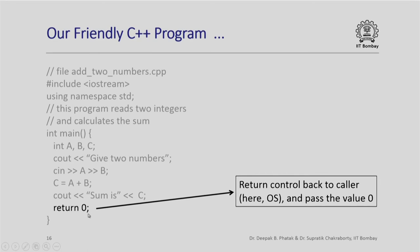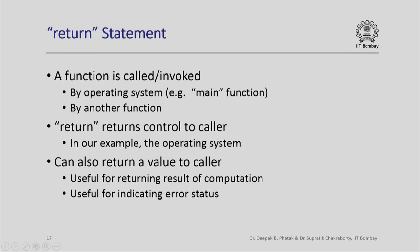At the end of the program we have the statement 'return 0'. This is a very important component used to return control back to whoever called the function — here that is the operating system. By executing this statement, we return control to the operating system and pass the value 0 back to the caller. A return statement returns control to whoever called the function, whether that is the operating system or another function. The returned value is useful for returning computation results or indicating error status if an error occurs during execution.